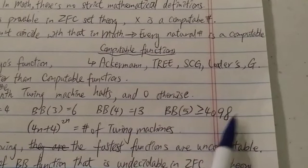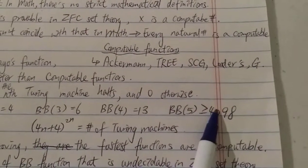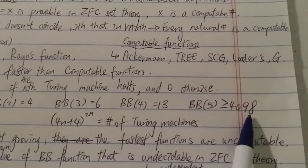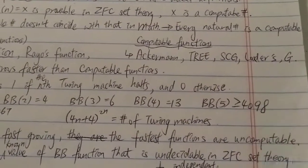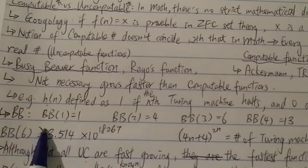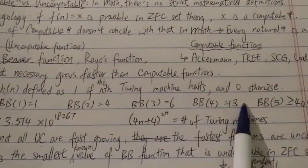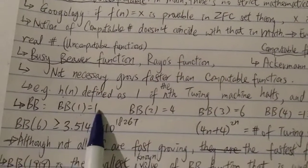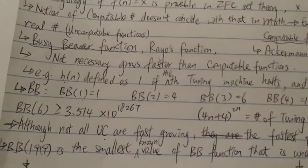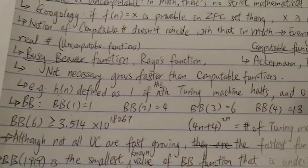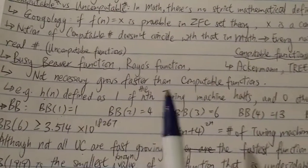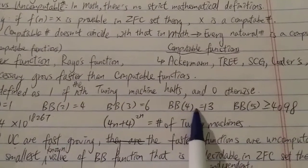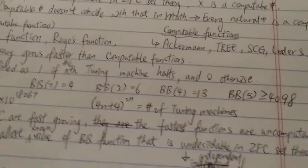BB(5) is known to be at least equal to 4098. This one is not confirmed yet because there are still some machines running, so you have to wait until all the machines finish. Then you will get the final answer to see if it's actually 4098. There's no algorithm to calculate this number, however there are still some ways to find out the output. It's not by calculating. The only way is by looking at all the Turing machines. Basically, you have to let them run until they all finish.